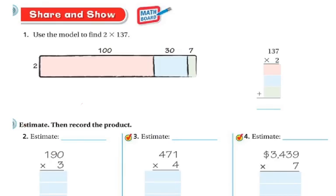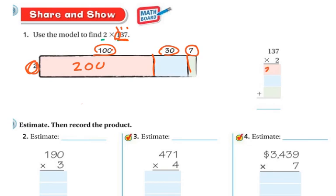So you can use the model to show the same thing. If we're going to do 2 times 137, just like we did yesterday, using our partial product in our little bar. So I'm going to have 2, and I'm going to break apart the 137. Since it has 3 digits, I'm going to do 3 breaks: 100, then in the tens I have 30, and in the ones I have 7. So now I'm going to do my partial products — 2 times 100, which is 200 — and over here in the red box, I'm going to put 200.